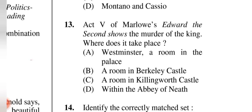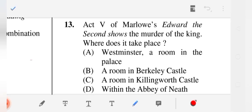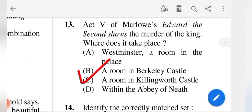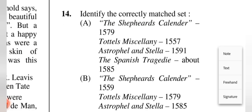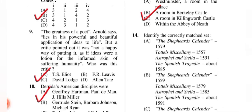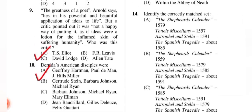Question 13: Act 5 of Marlowe's 'Edward II' shows the murder of the king. Where does it take place? The correct answer is (B) a room in Berkeley Castle.